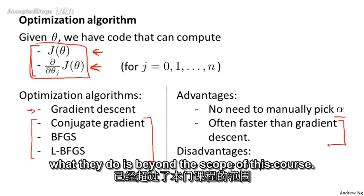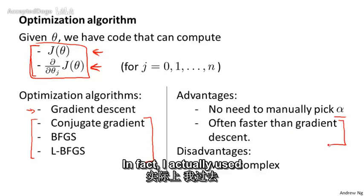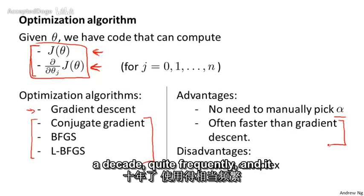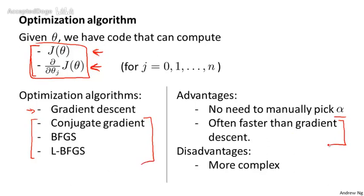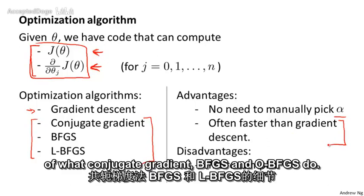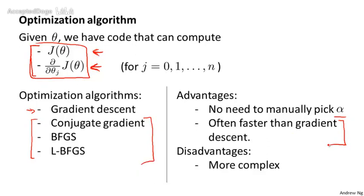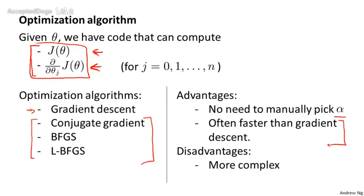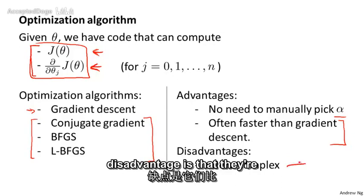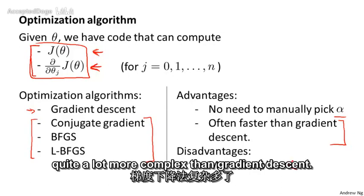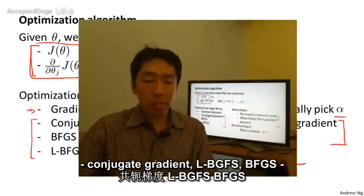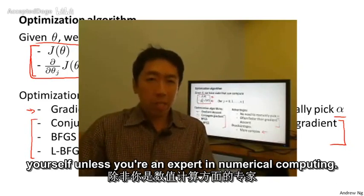Detailed discussion of exactly what they do is beyond the scope of this course. In fact, I actually used these algorithms for a long time — maybe over a decade quite frequently — and it was only a few years ago that I actually figured out for myself the details of what conjugate gradient, BFGS, and L-BFGS do. So it is entirely possible to use these algorithms successfully and apply them to many different learning problems without understanding the inner workings. If these algorithms have a disadvantage, the main one is that they're quite a lot more complex than gradient descent, and you probably should not implement conjugate gradient, L-BFGS, or BFGS yourself unless you're an expert in numerical computing.